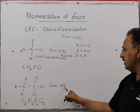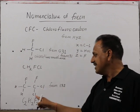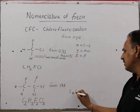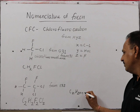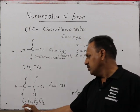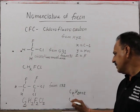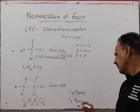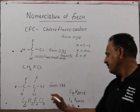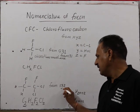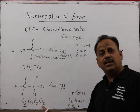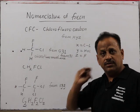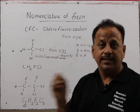The three numbers represent carbon, hydrogen, and fluorine — and chlorine is derived from the remaining valency. Because these are alkanes, we can use the common formula. If there are 2 carbons, there are 6 total substitution positions. After accounting for hydrogen and fluorine, the remaining positions are chlorine. These are the Freons.